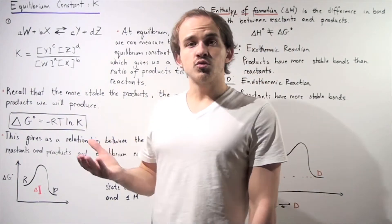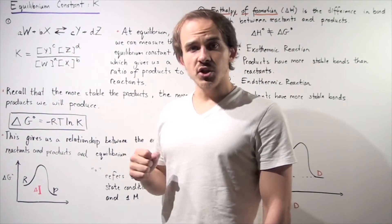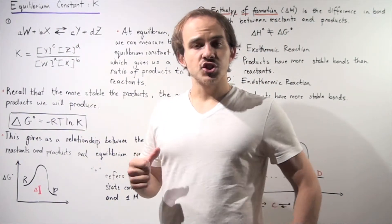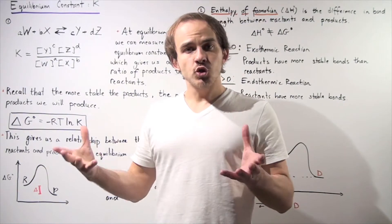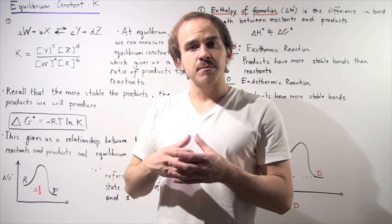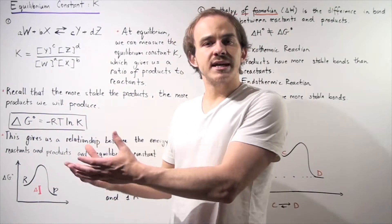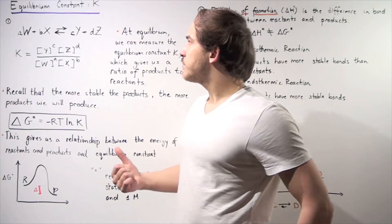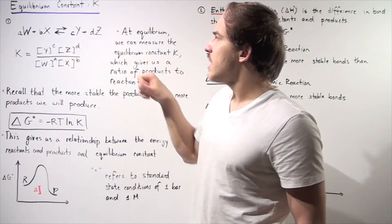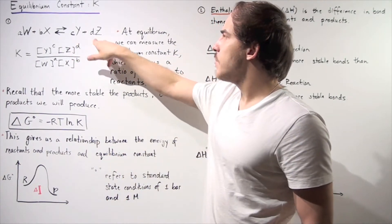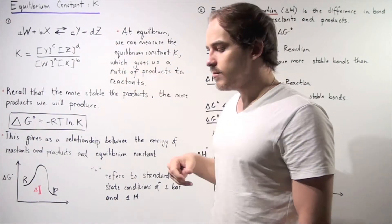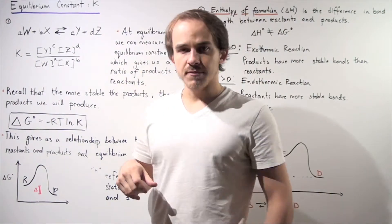Let's suppose we mix A moles of W with B moles of X. I take two different reactants and mix them in a container, and I begin to produce my products — C moles of Y and D moles of Z.